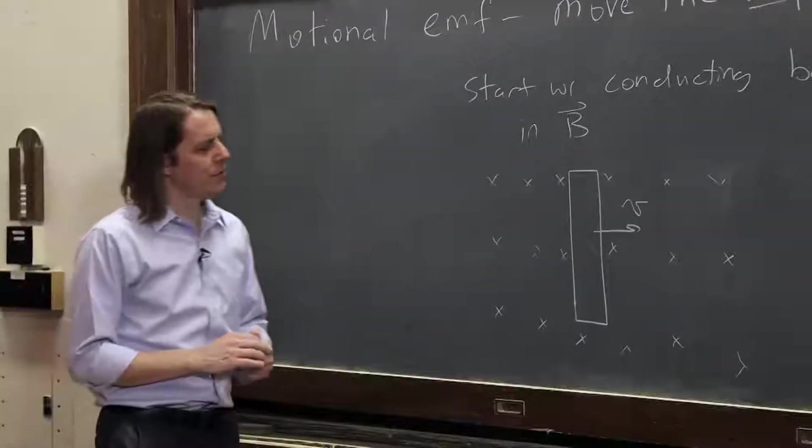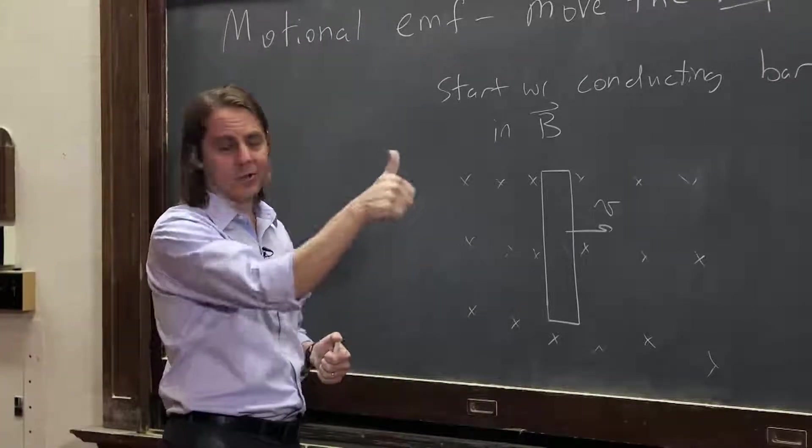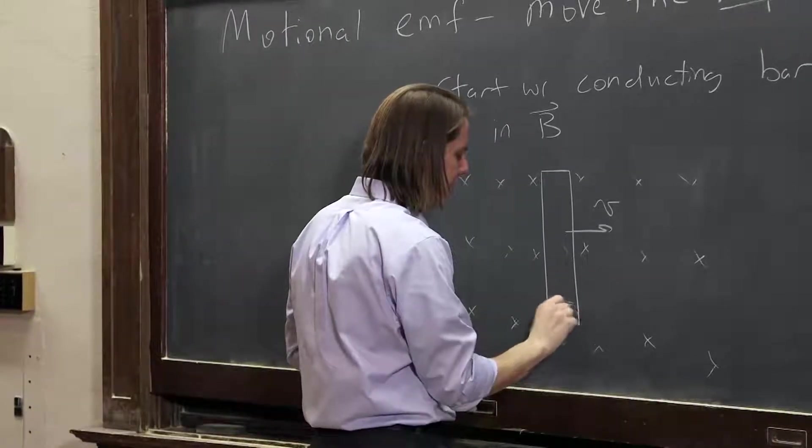Then those electrons are going to feel a force. V cross B is up, but that would be for the positive charges. The electrons are going to feel a force down, and they're going to all crowd around down here.